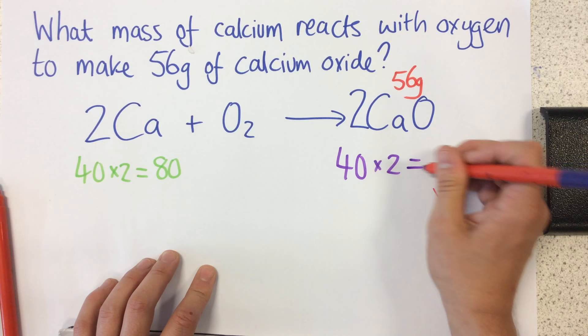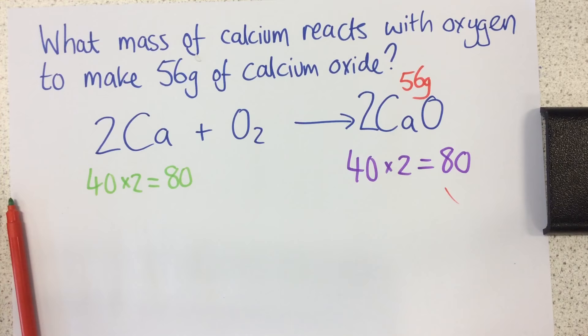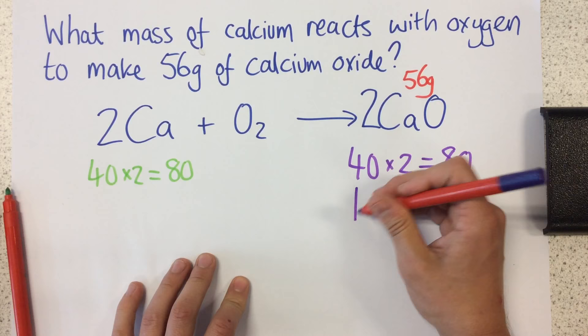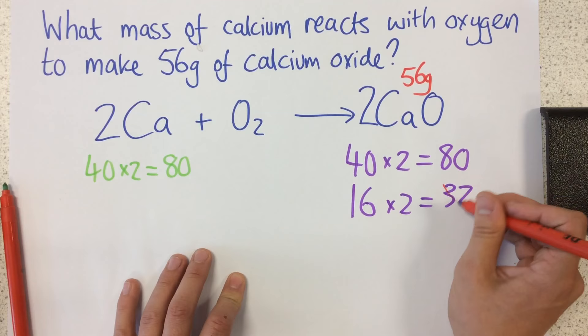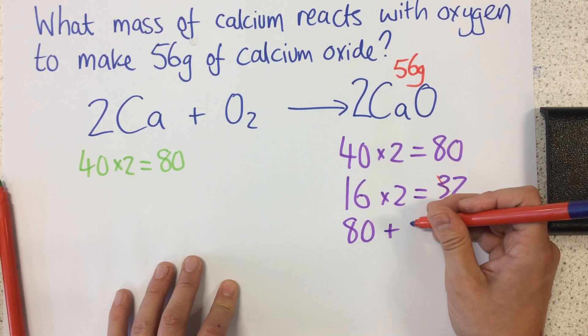And for oxygen, my relative atomic mass of oxygen is 16. Again, I've got two oxygens, so that total is 32. So in total, my relative formula mass on this side of the equation of my calcium oxide is 80 plus 32, which is 112.